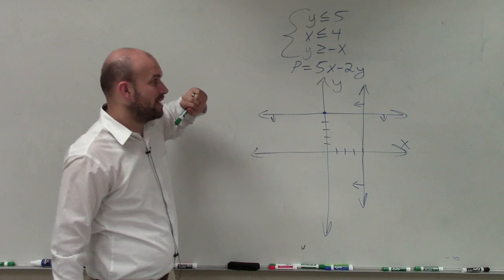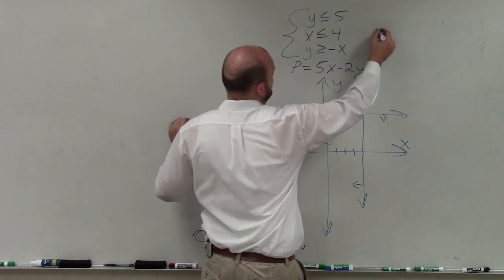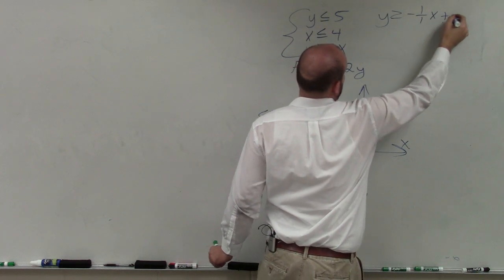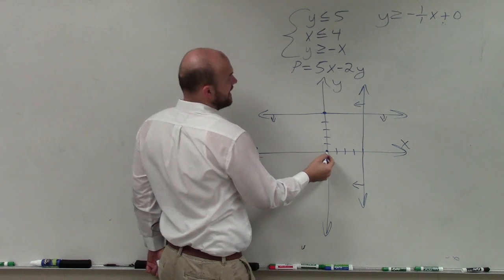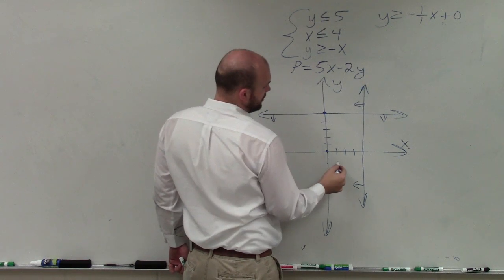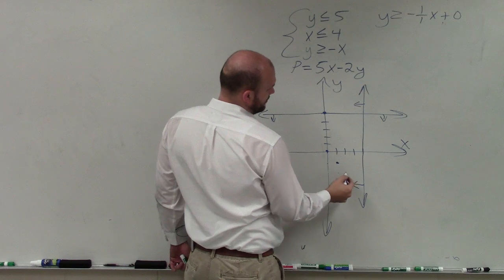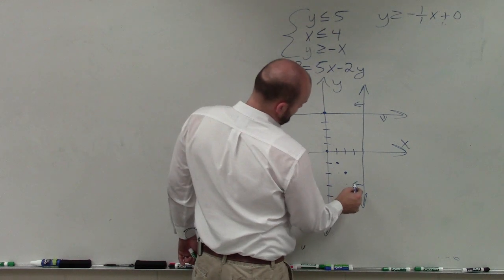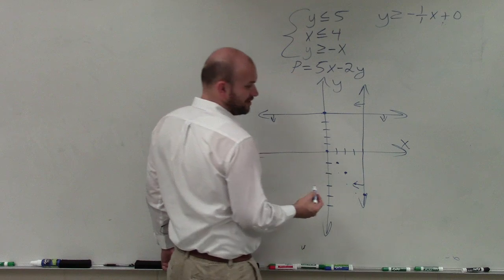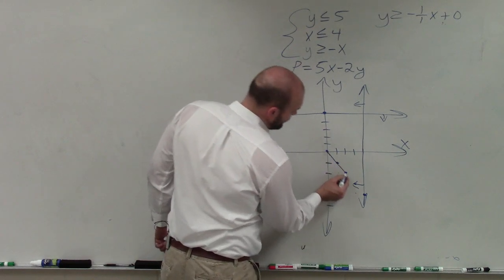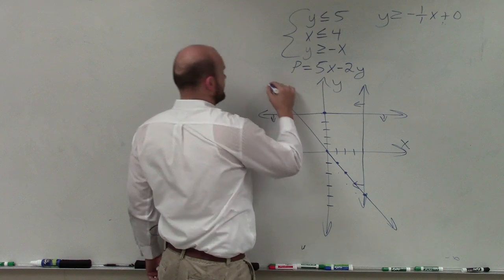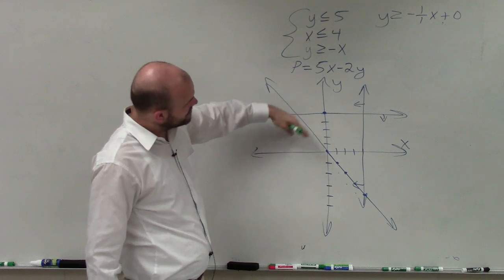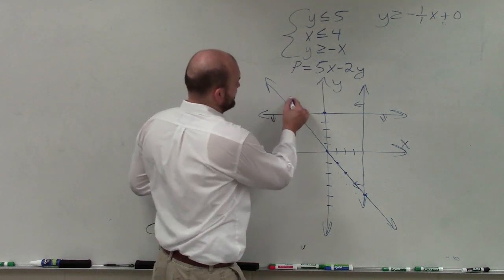Then I need to graph y is greater than negative x. To rewrite this in slope-intercept form, that is going to be y is greater than negative 1 over 1 times x plus 0. So the y-intercept is at 0, and now I'm going to go down 1 over 1. It's really important for us to be able to determine where those points intersect to obtain our vertices. And since y is greater than negative x, all the values that are greater than this boundary line are going to be facing up.